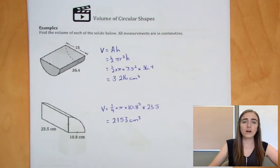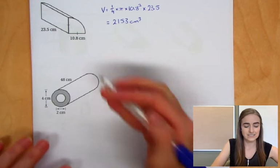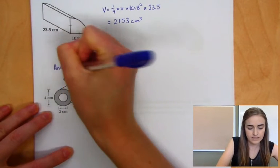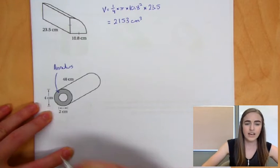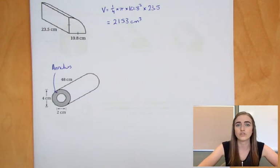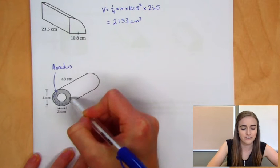Alright, I want to have a look at one more example, and that's this one down the bottom here. This shape here is what's called an annulus. So that's the shape that's on the front here. And what it is, it's like a pipe. So it's like a circle that's got another circle cut out from in the middle of it. So we're just looking at this shaded region around the edge here.